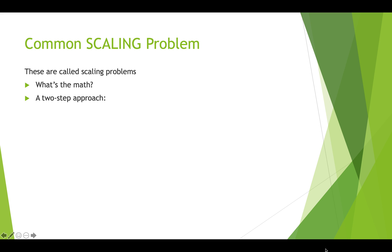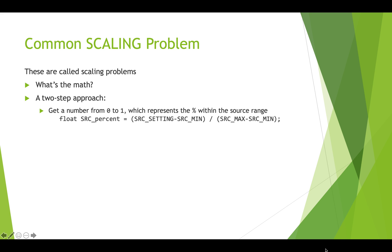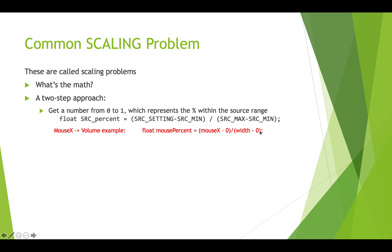Here's the math. The first is a two-step approach. We're going to get a number from zero to one representing the percentage of the current setting within the source range. We say: float sourcePercent = (sourceSetting - sourceMin) / (sourceMax - sourceMin). This gives us the size of the source range and tells us where the current setting is within it. In the mouse-to-volume example, we would do: float mousePercent = (mouseX - 0) / (width - 0), which simplifies because of the zeros.